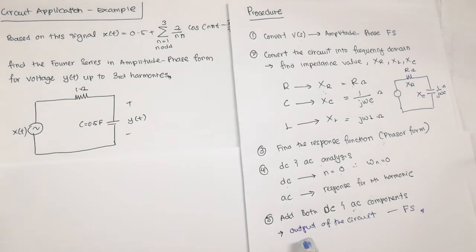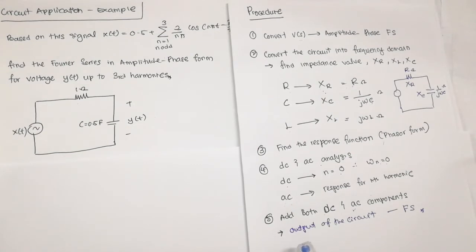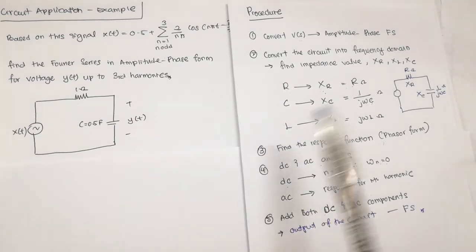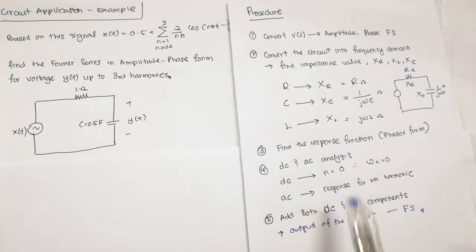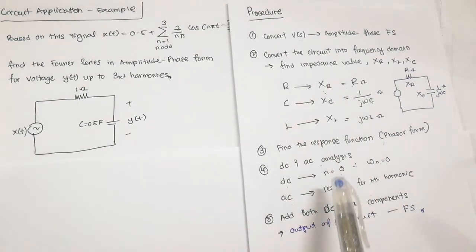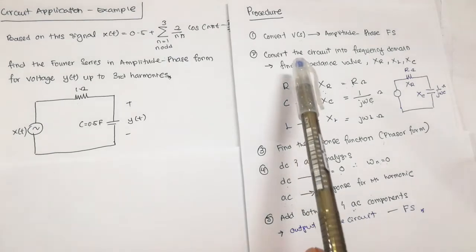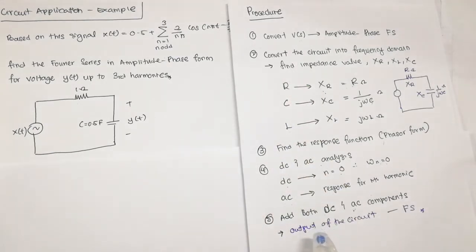Finally, we will add both the DC and AC analysis results together to get the overall response function of our circuit — whether you want to measure the output, or the voltage or current across a component. So let's do it.